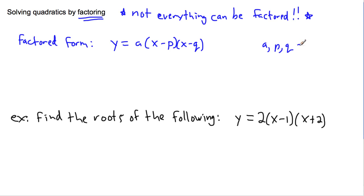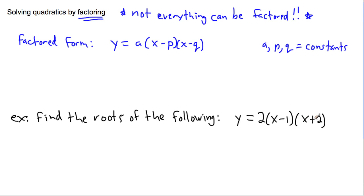Here a, p, and q are just constants — just numbers. For example, y equals 2 times (x minus 1) times (x plus 2). In this case, a is 2, p is 1, and because the formula has (x minus q), q has to be minus 2.